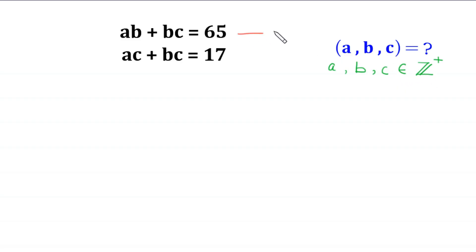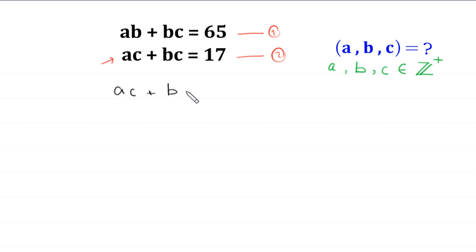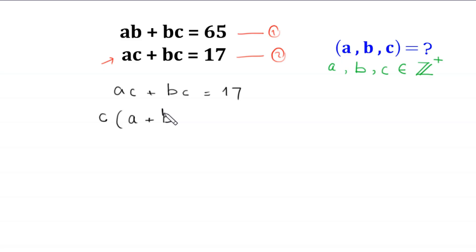Let us call the first equation equation 1 and the second equation equation 2. We start from equation 2: A times C plus B times C is equal to 17. From these two terms, we can factor out C, giving C times (A plus B) is equal to 17.